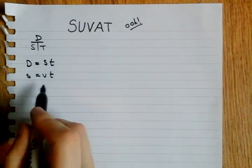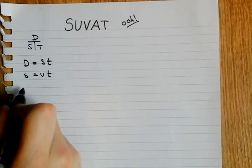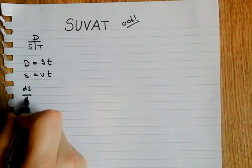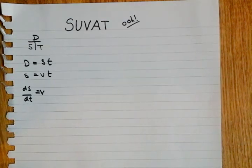Okay. Now, if we differentiate both sides with respect to T, we get dS over dT is equal to V. Next and easy.